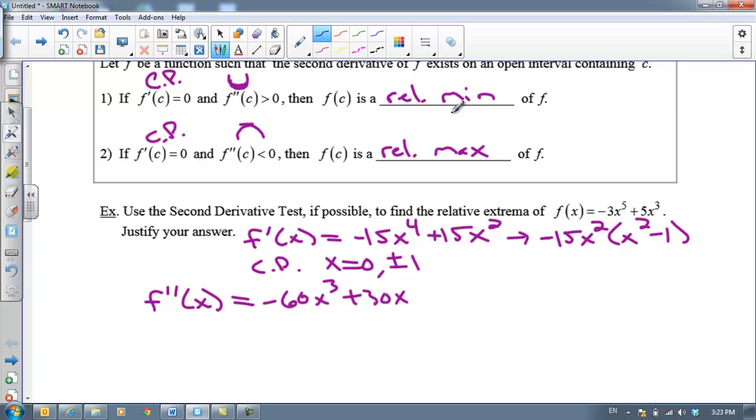The second derivative test says if you plug any critical points into the second derivative, if it's positive, we are at a relative minimum and if it's negative, we're at a relative maximum. Let's try this. F double prime at my first critical point of zero would work out to be zero. Now zero is not positive or negative, so the test fails here. I would have to use the first derivative test, but that's not what the question asked me to do.